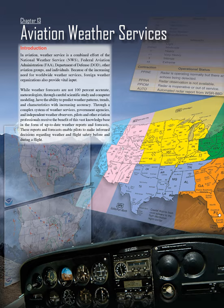Chapter 13: Aviation Weather Services. Aviation Weather Service is a combined effort of the National Weather Service (NWS), Federal Aviation Administration (FAA), Department of Defense (DOD), other aviation groups, and individuals. Because of the increasing need for worldwide weather services, foreign weather organizations also provide vital input.